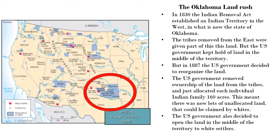In 1887, the US government decided to reorganize the land. They recognized that they had given a huge amount of land to these Eastern tribes and some of that land was very valuable. So the US government removed ownership of the land from the tribes and just allocated each individual Indian family 160 acres. This was sneaky — it meant there was now lots of unallocated land that could be claimed by whites.